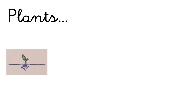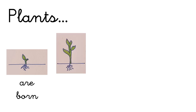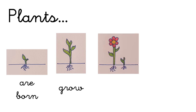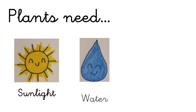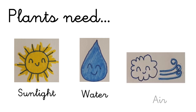Plants have a life cycle. They are born, they grow, they reproduce, and finally they die. To grow, plants need sunlight, water and air. With these three things, plants can grow.